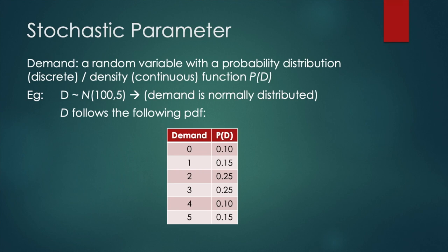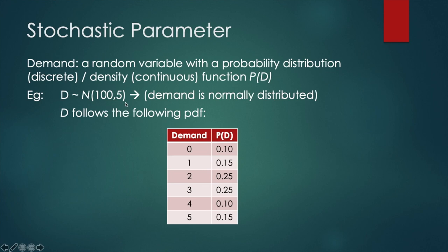The biggest difference between this and all the other models we have discussed is that your demand is stochastic. A stochastic demand means your demand is a random variable with a probability distribution if the demand is discrete, or a probability density function if the demand is continuous. Generically, this probability distribution or density function is denoted as P(D). For example, demand can be normally distributed with a mean of 100 and a standard deviation of 5, in which case demand is continuous.